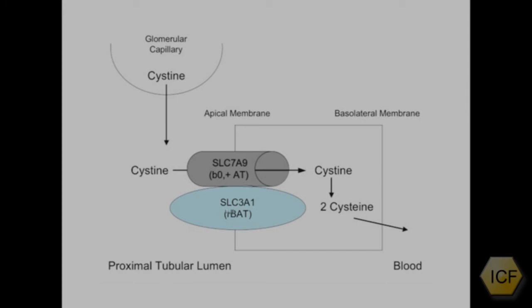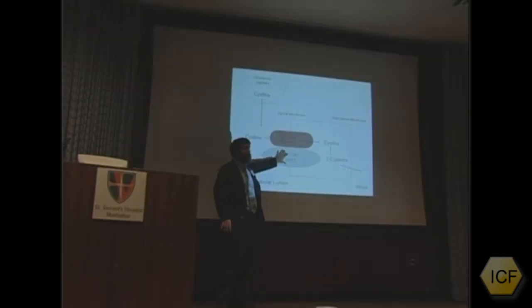That molecule turns out not to transport the cystine itself, but it's necessary for this molecule to be in the membrane in its appropriate place, to get to where it's supposed to go when the cell makes this complex.